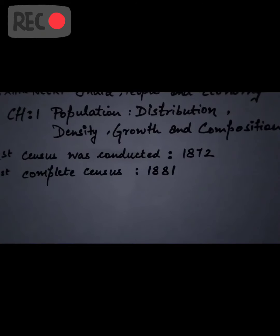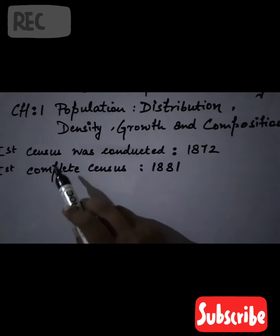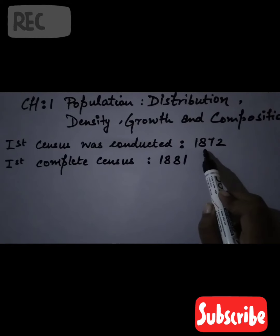The first chapter is mostly facts. First, you should know that our first census was conducted in 1872, but it was not complete. The first complete census was completed in 1881. You need to remember both these facts.